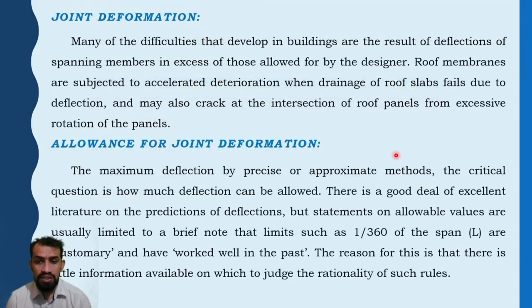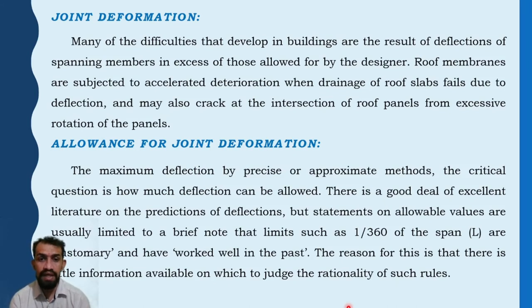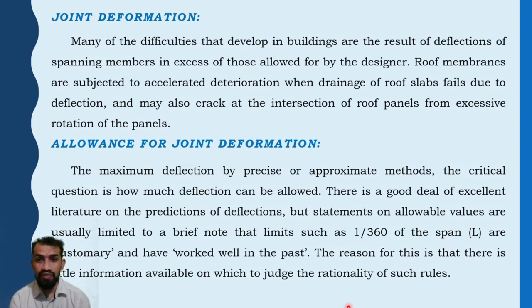Joint deformation: many difficulties that develop in a building are the result of deflections of spanning members in excess of those allowed for by the designer. Roof membranes are subjected to accelerated deterioration when drainage of roof slabs fails due to deflection, and may also crack at the intersection of roof planes from excessive rotation.